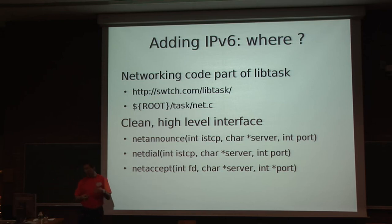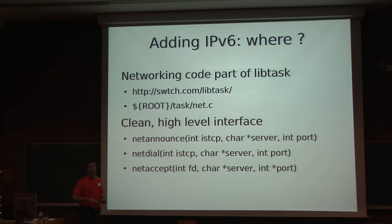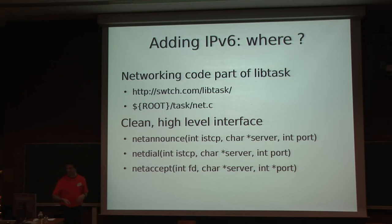which is a task library by Russ Cox. The abstractions in that library are really pleasant to work with. Effectively, you don't need to work with the one-time-use structures where you take a name, convert it into a structure, and then just use that structure once — all of that is abstracted inside the library. There are three primitives to work with: announce the socket, start connecting to a client or a server, and accept incoming connections. This provides a clean abstraction layer from the rest of the code.